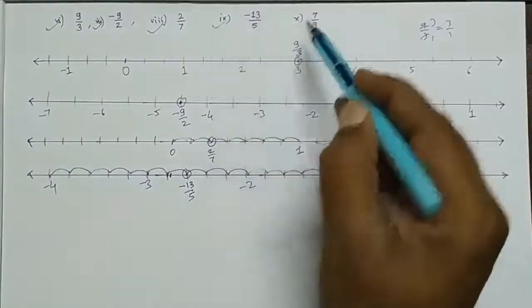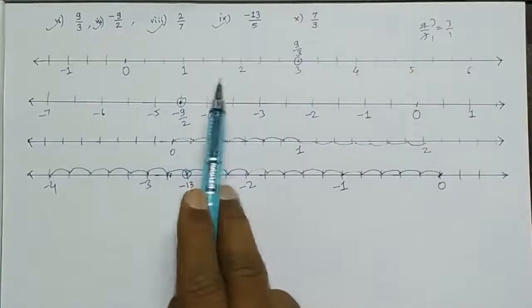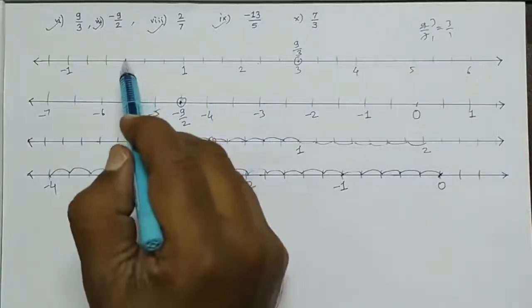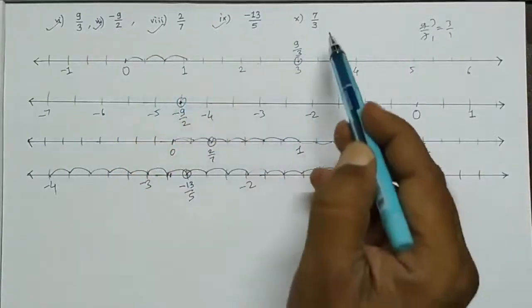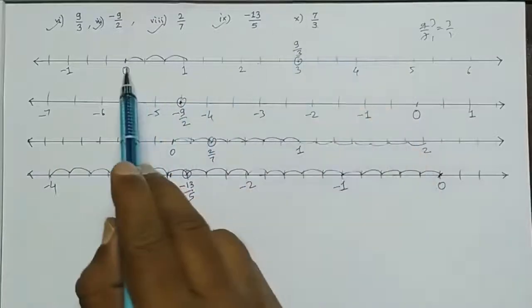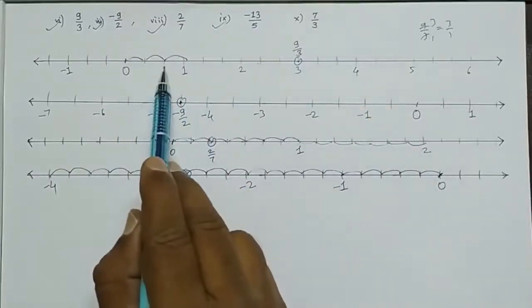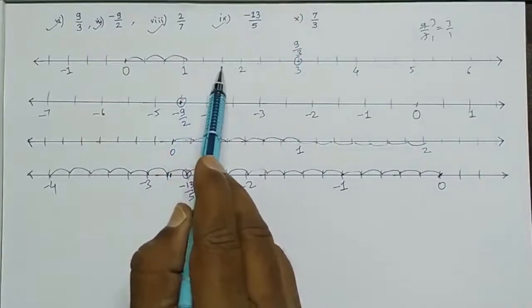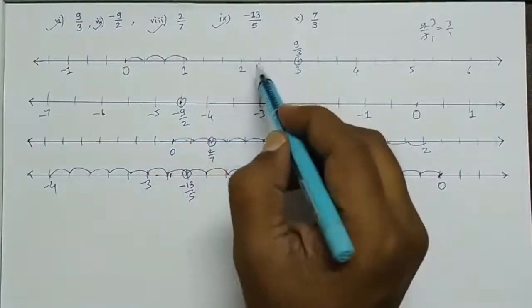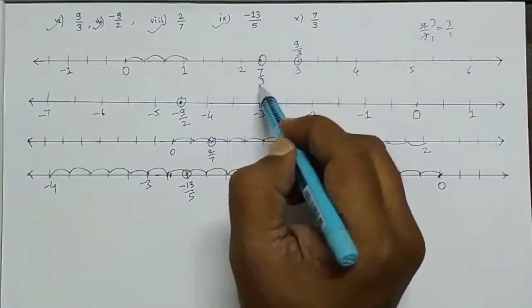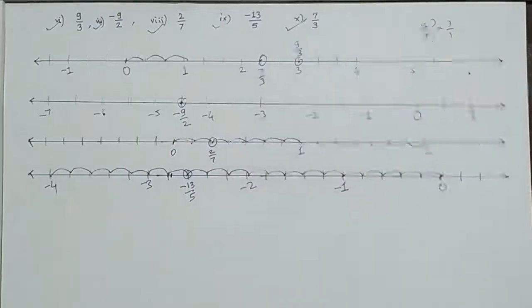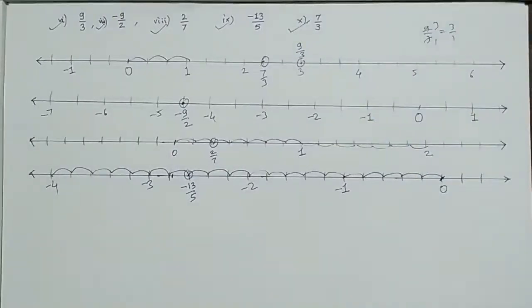Next: 7 upon 3. From the same number line with 3 parts per unit, counting from 0 going positive: 1 by 3, 2 by 3, 3 by 3, 4 by 3, 5 by 3, 6 by 3, and 7 upon 3 is here. This way we completed the first exercise of the new textbook. Make a new notebook and write all sums neatly. See you in the next video.